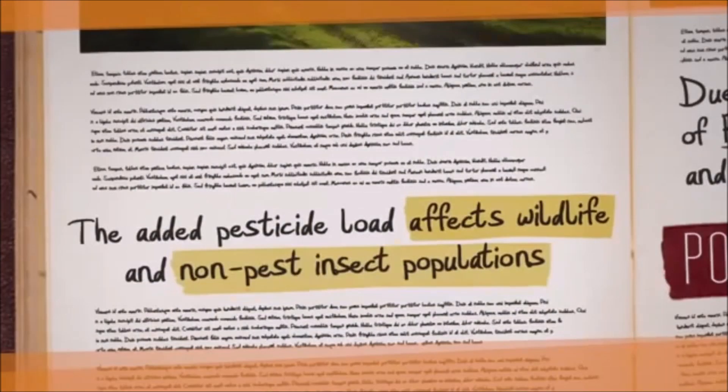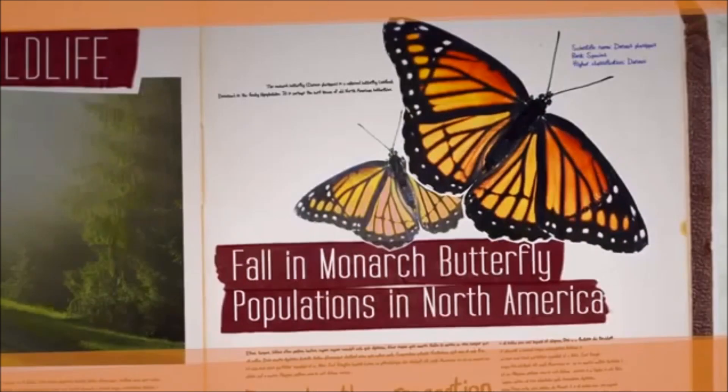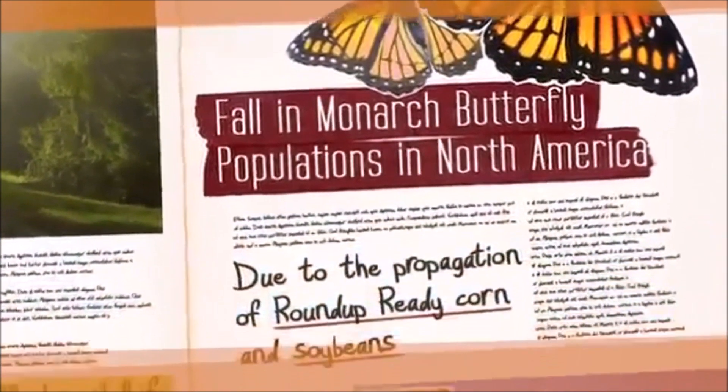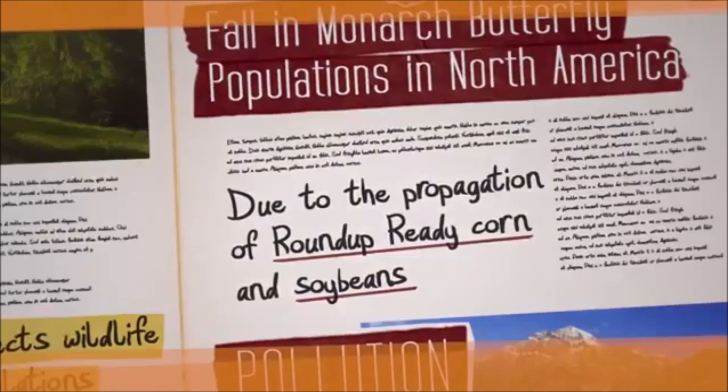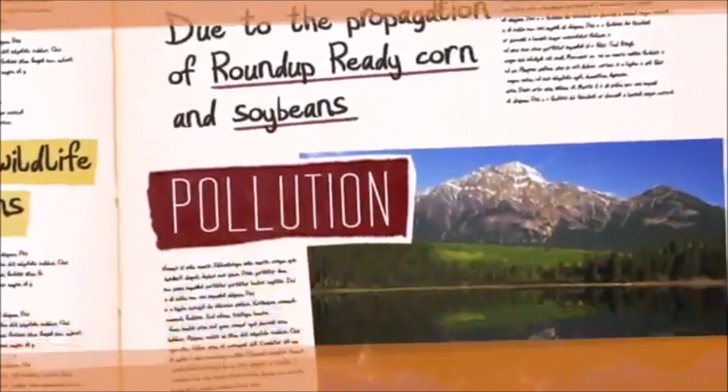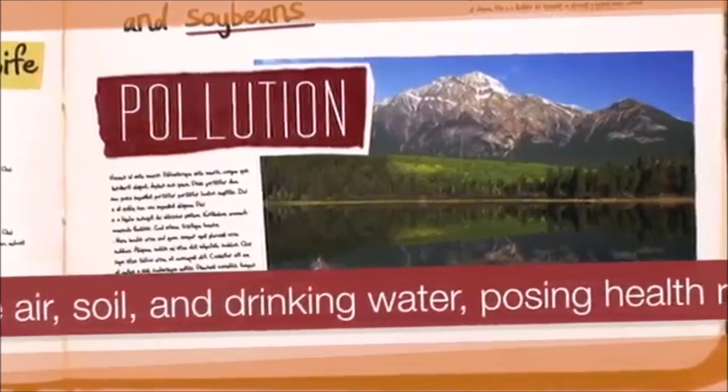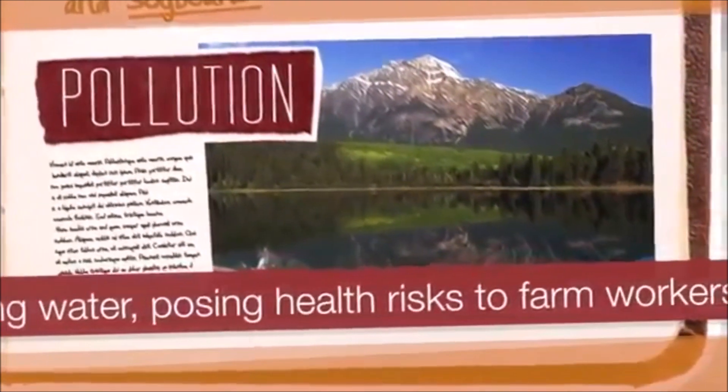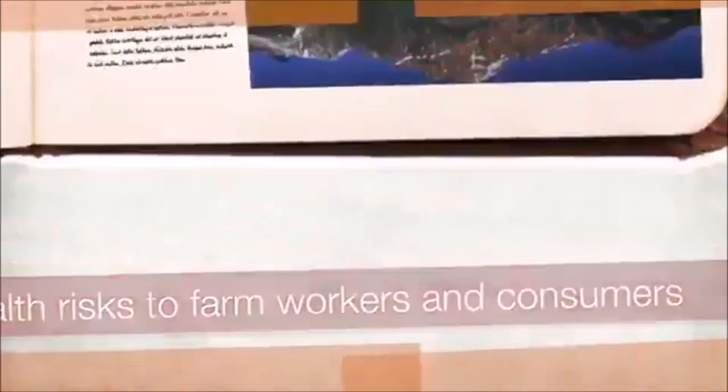The added pesticide load affects wildlife and non-pest insect populations, such as the fall in monarch butterfly populations in North America brought about by the propagation of Roundup-ready corn and soybeans. Herbicides and pesticides pollute air, soil, and drinking water, posing health risks to farm workers and consumers.